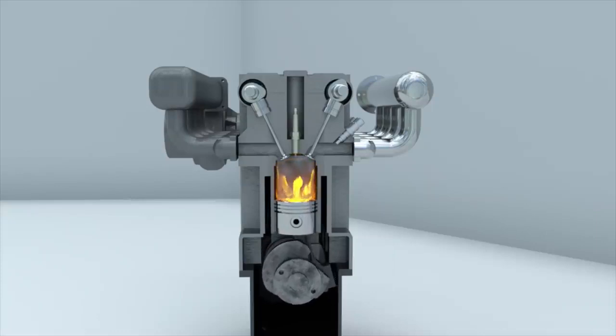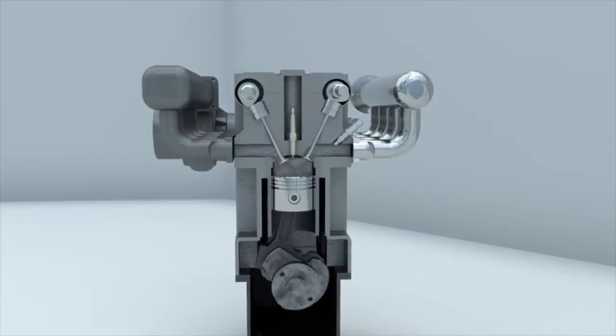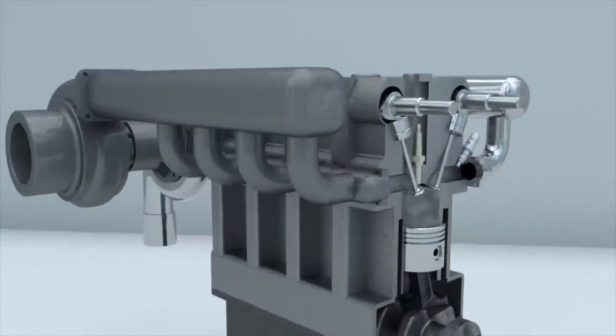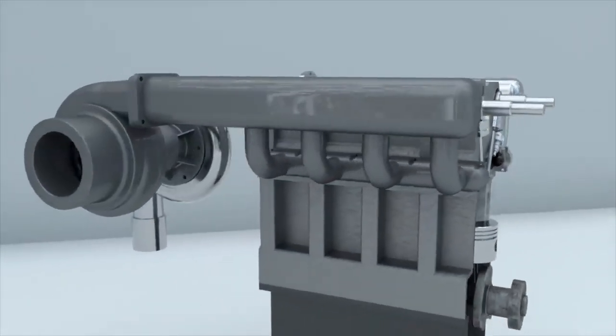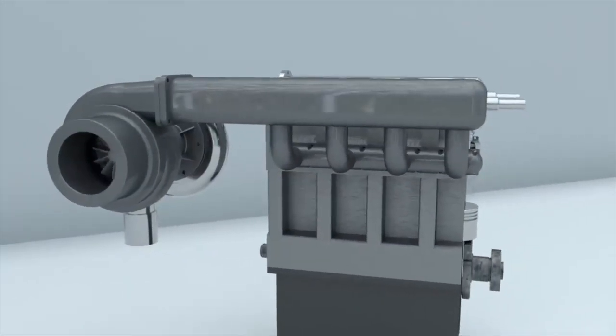The exhaust gases are then forced out of the cylinder by the piston and move towards the turbine. The particles of gas act upon the blades of the turbine wheel, causing it to rotate. The turbine and compressor wheels are mounted on one shaft. When the turbine wheel rotates, the compressor wheel also rotates, forcing air into the engine's cylinders.